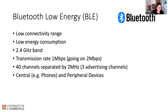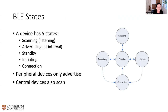There are various advertising channels available for communication. Bluetooth has been integrated into what we call central and peripheral devices. Peripheral devices are simpler devices, while phones are considered central devices which can do scanning. Peripheral devices—like a mouse—cannot scan; they just send advertising packets. In general, a Bluetooth state for central devices is either scanning, advertising, standby, initiating, or in connection.